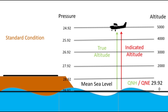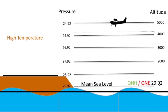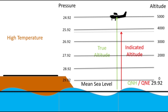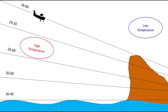Temperature correction is not required under standard conditions. In the case of high temperature in the atmosphere, isobars expand and true altitude will be more than indicated altitude. The opposite is true for low temperature — the altimeter will indicate a higher altitude, but the aircraft will actually be at a lower altitude. If an aircraft moves from a high temperature area where isobars are more apart to a low temperature area where isobars are closer, the true altitude of the aircraft will keep on decreasing, which can be very dangerous.